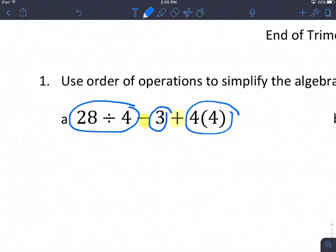Now I can go ahead and I can simplify what is inside of my circles. So I have 28 divided by 4, which is 7. My 3 isn't going to change, and then I have 4 times 4, which is 16. And then I'm going to just bring down the signs that were there before. So the subtraction goes there, and addition is there.